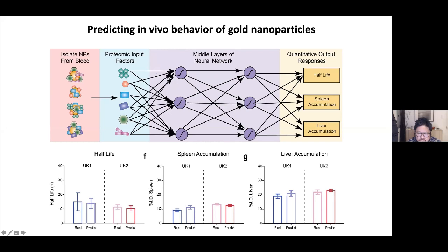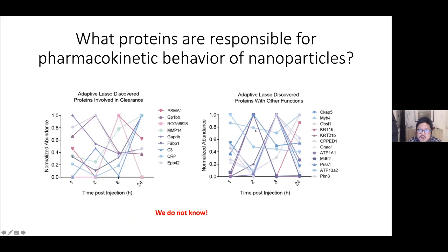Using the neural network algorithm, we can predict the half-life, spleen accumulation, and liver accumulation versus the real measured sample—with good agreement between predicted and measured values. However, when we asked which proteins are responsible for the pharmacokinetic behavior, the answer is we don't know. We mapped the 2, 4, 6, 8, 9 most prevalent proteins and they were all over the place. It's likely a multitude of proteins involved. The sub-question now is: what receptors and what ligands on the nanoparticles may be involved in the receptor-ligand pairing that mediates nanoparticle-cell interaction?